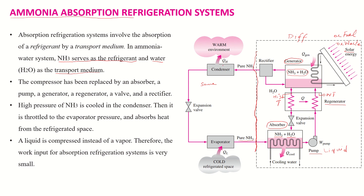After passing through the condenser, the ammonia is in liquid form at high pressure and temperature. It is then passed through the expansion valve, where its pressure drops. After the pressure drop, the boiling point of ammonia is also reduced, and during the evaporation process, heat is absorbed from the surroundings.